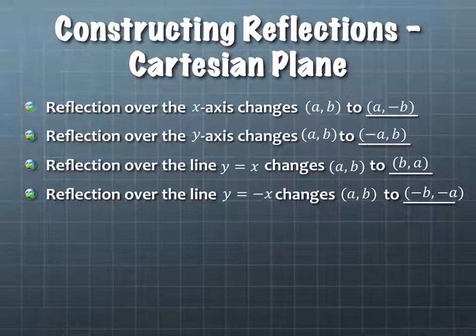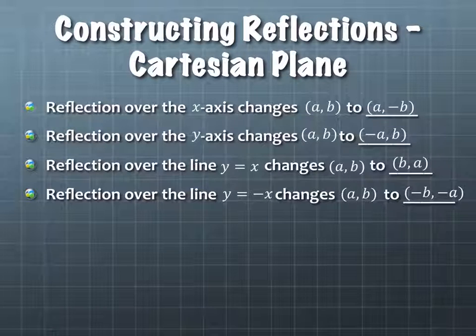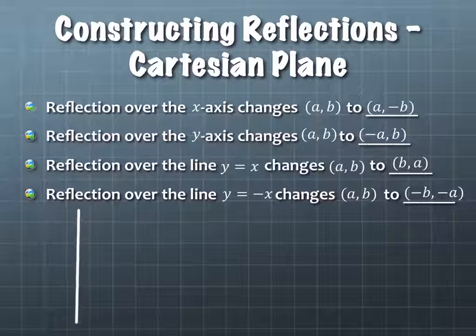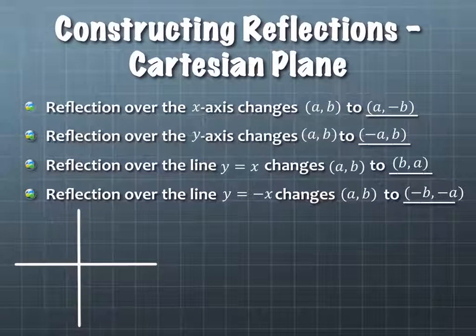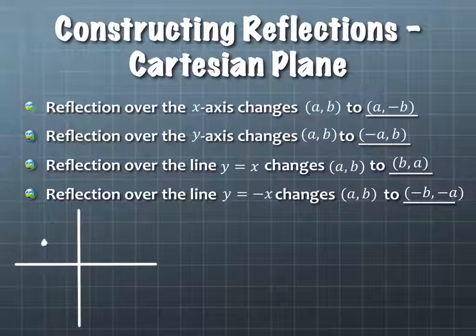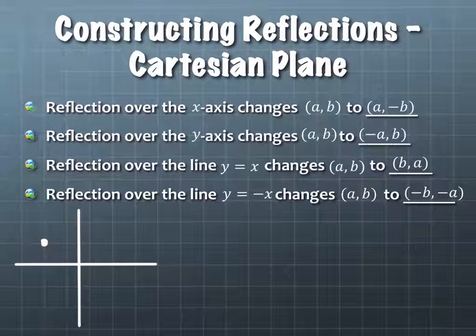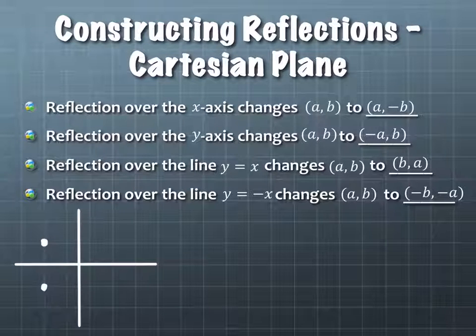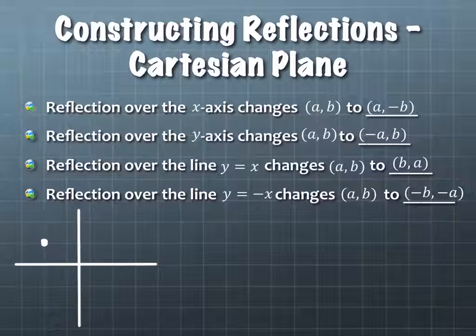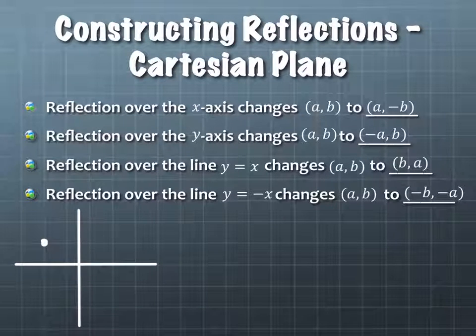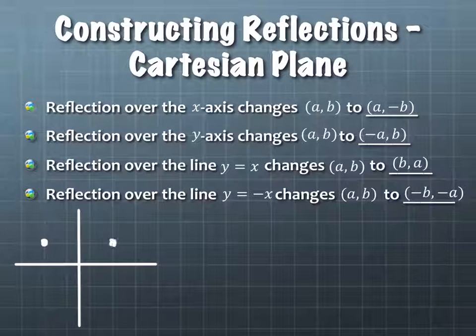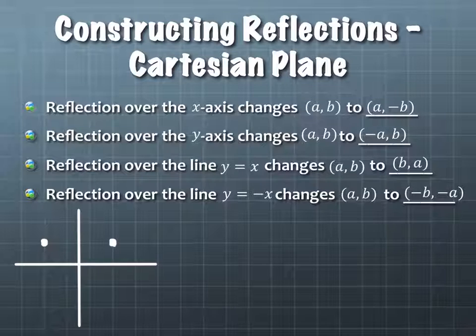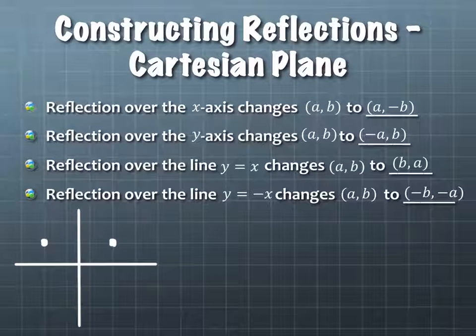So in the first one, if you reflect over the x-axis, what changed in the ordered pair? The b became negative. The y became negative. So if you imagine that from an axes standpoint, if you reflect this point over the x-axis, it would reflect down here. The x value stays the same, and the y value is different. It's negative. Now if you were to reflect over the y-axis, what do you notice is different in the ordered pair? The x value changed signs. So if this one were to reflect over here from my picture, x distance is the same distance, but it's in the opposite direction. And the y distance is exactly the same.